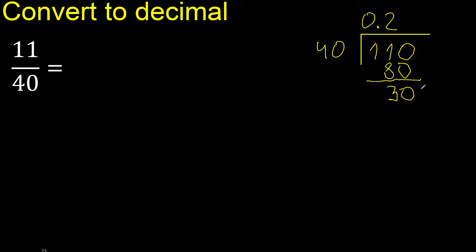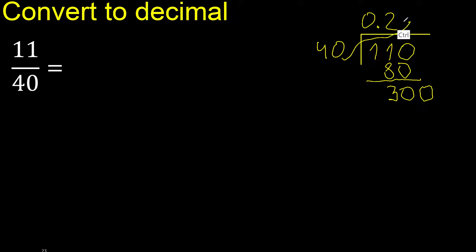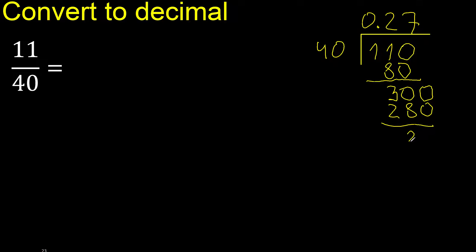There is no number that goes down, therefore complete — always complete with 0. Point only once. 340 — multiply by which number. Multiply by 8 is 320, which is greater. Multiply by 7 is 280, not greater. Subtract — remainder is 20.